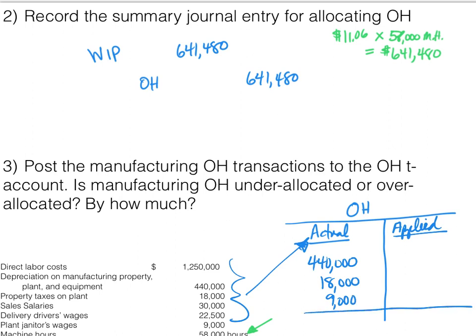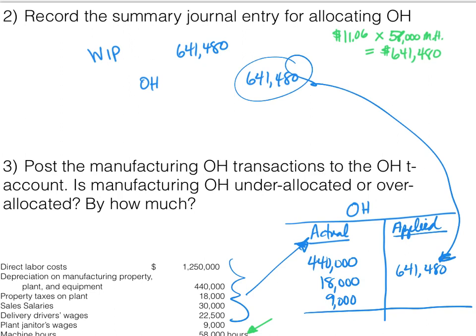We applied $641,480 on the credit side of the T-account. After summing the actual costs on the debit side, we can see we applied more than we actually incurred, so we are over-applied in this problem. Since we don't want overhead to carry a balance, we close it out by debiting overhead for $174,480 and crediting cost of goods sold.